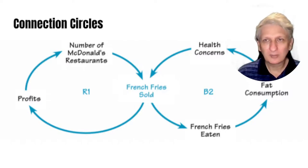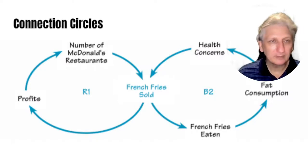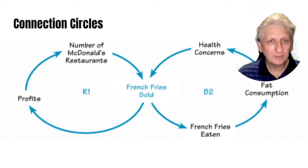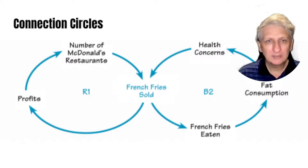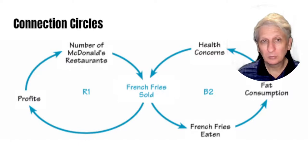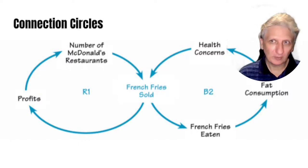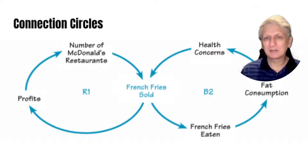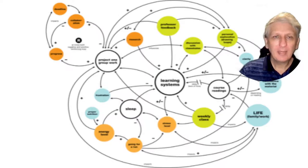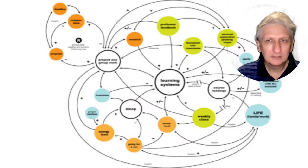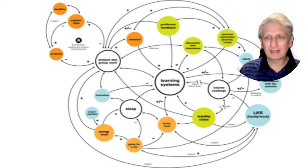We then build out what loops exist — similar to those in the stock flow diagram. On the left, a reinforcing loop: more french fries, more profits, more restaurants, more french fries. On the right, a balancing loop: more french fries eaten increases fat consumption, which increases health concerns, which decreases the number of french fries sold — an oscillating balancing loop. These can become quite complex, as shown in a connection circle diagram for a learning system at a university with various interactions between all different complex elements.